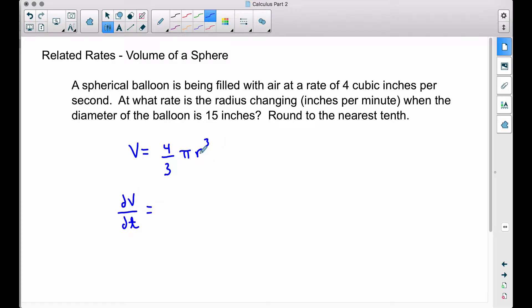This is equal to, the only variable we have on the right hand side is this variable r, so we're going to take the derivative of r cubed with respect to time. Let's pull that 3 down and multiply it by this 4 thirds.